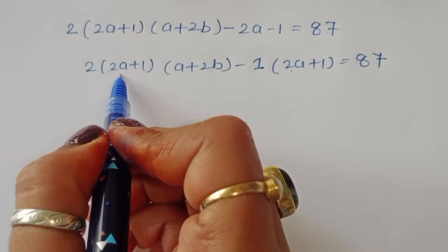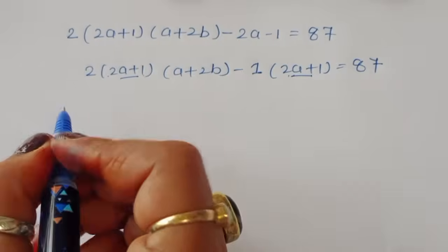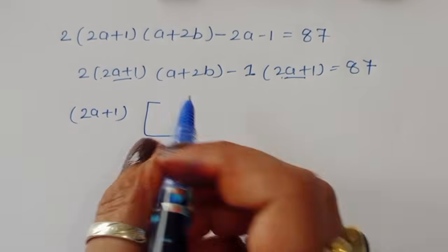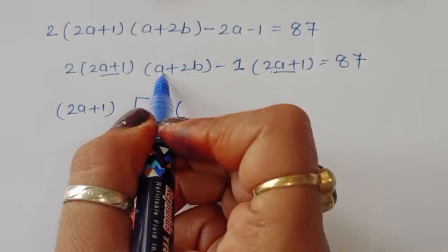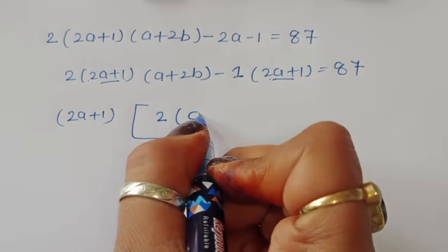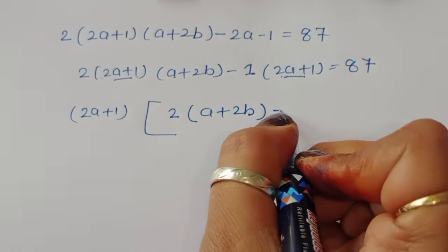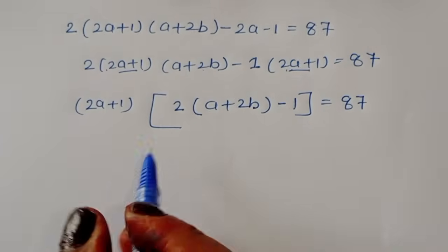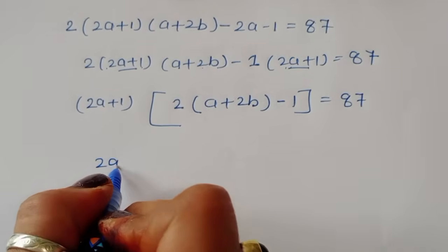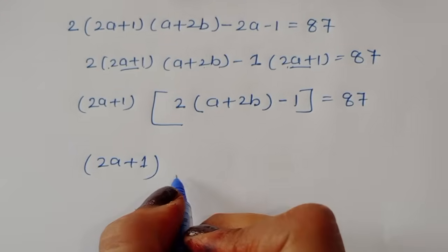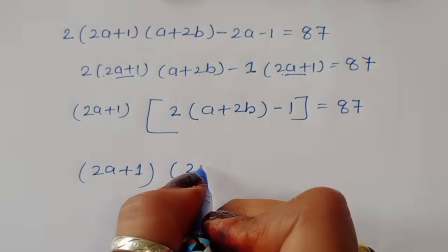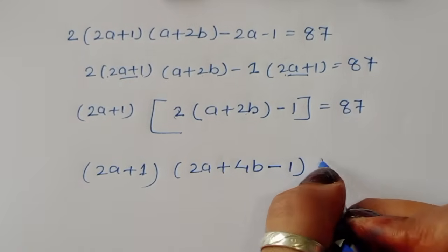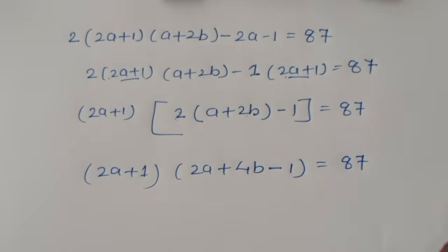Rearranging, we get (2a + 1)(2a + 4b − 1) = 87. Now we need to find the factors of 87.